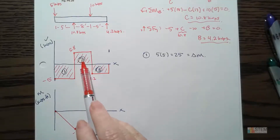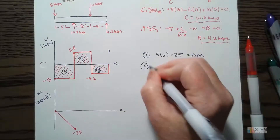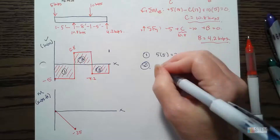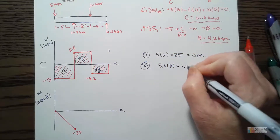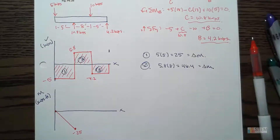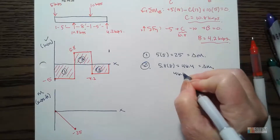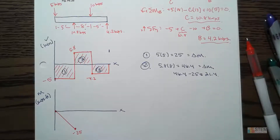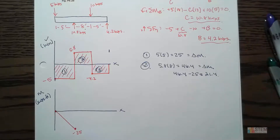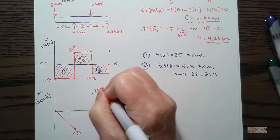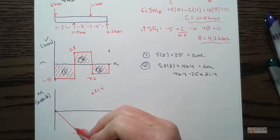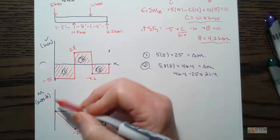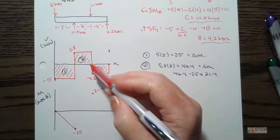Now section two: I want to find this area. The height is 5.8 and the length is 8, so 5.8 times 8 equals 46.4 — that's delta M. So we do 46.4 minus 25, which takes us to 21.4. This is going up with a positive slope because V is positive here. Down in region one we had negative V so we got a negative slope; here it's positive V so we get a positive slope.